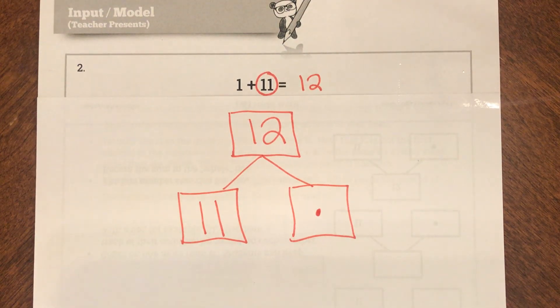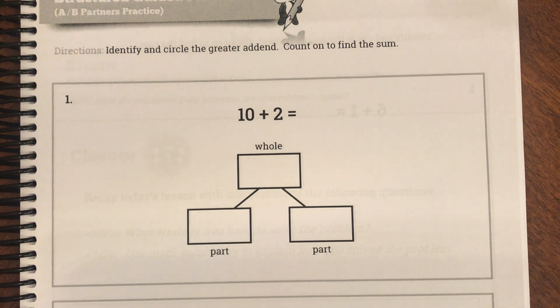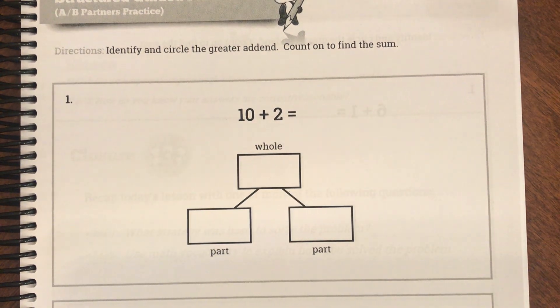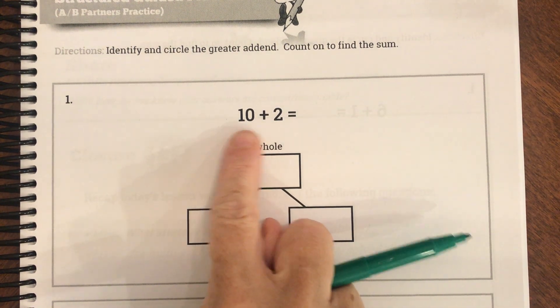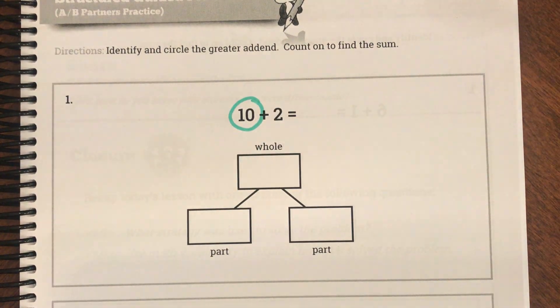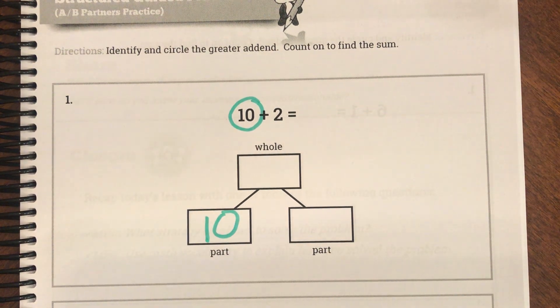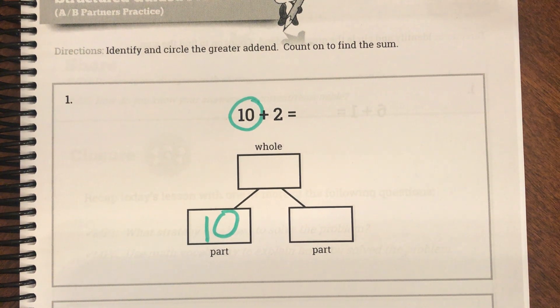So ladies and gentlemen, we're going to do some of these together. We are on page 156. If you could join me on page 156. Our equation says 10 plus 2 equals. So we're going to start by circling our greater addend. So what should we circle? The 10 or the 2? Which one's greater? The 10 is greater. So our first part or our first addend is 10. So let's put a 10 there. And they want us to add 2 to it.